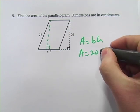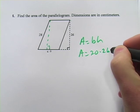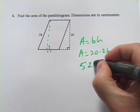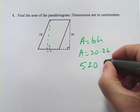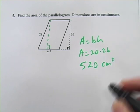So this is going to be the base, which is 20, times the height, which is 26. And I think you get 520 when you calculate that. And this is centimeters, so centimeters squared.